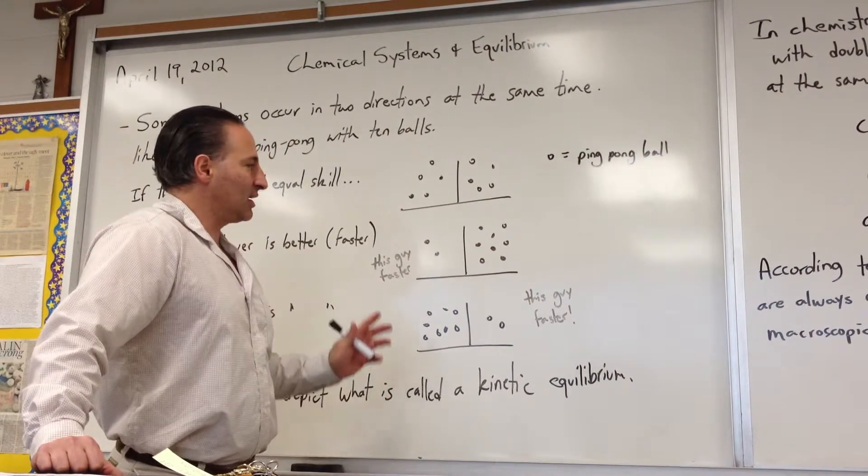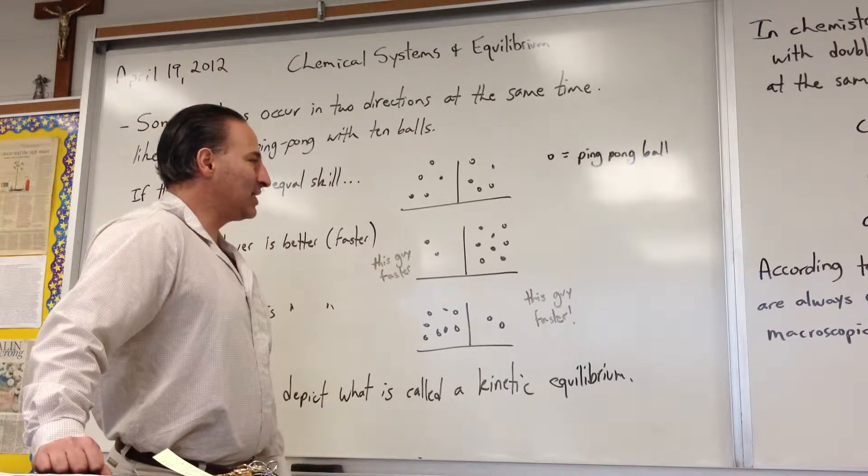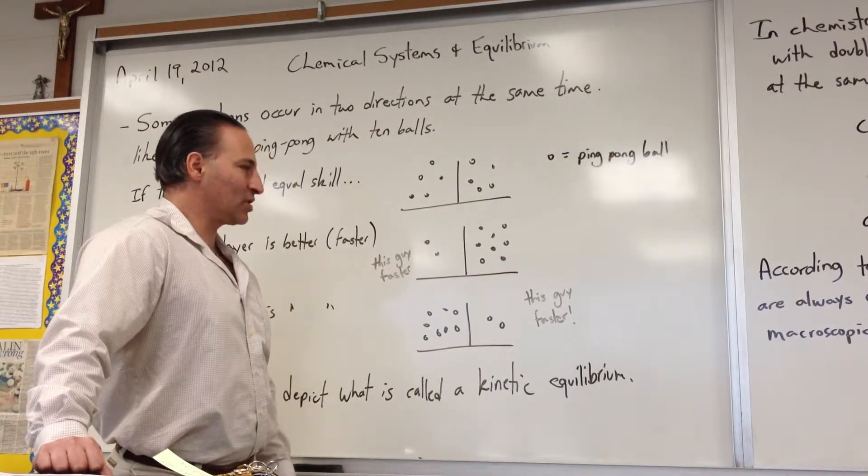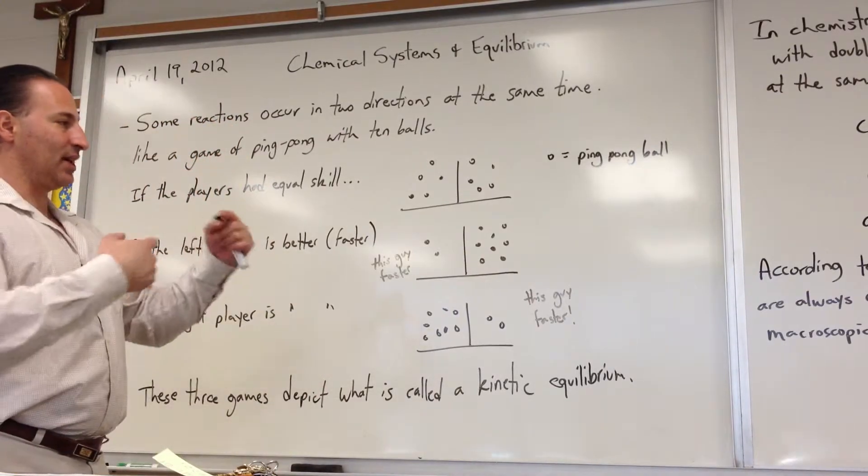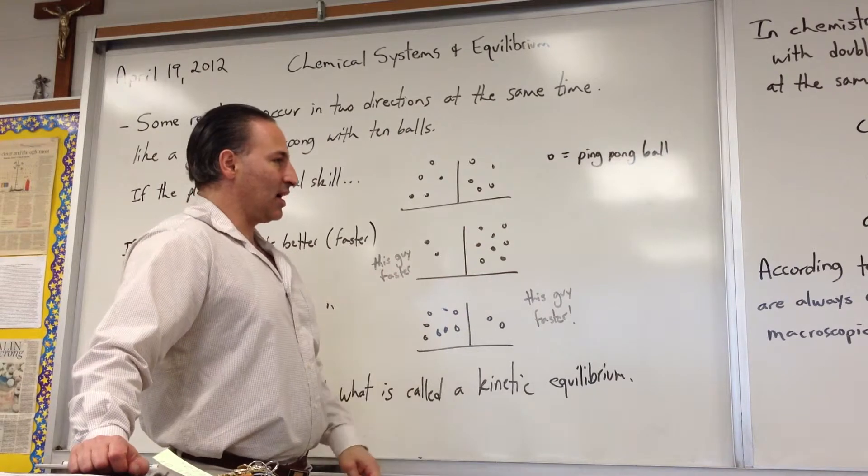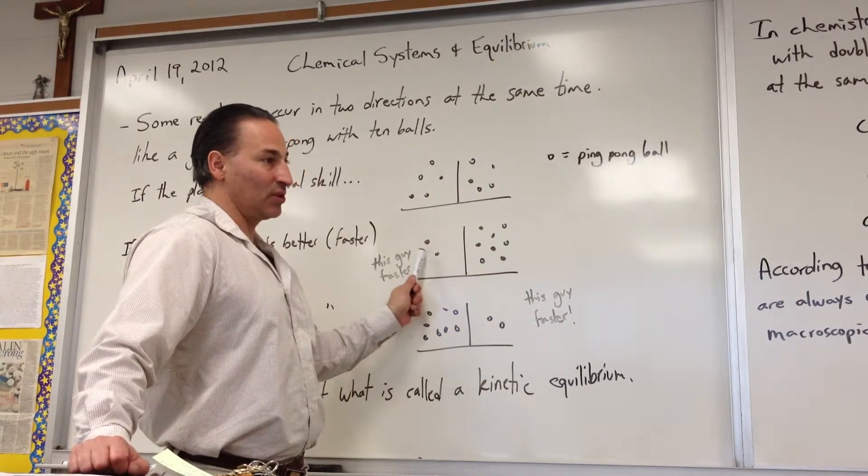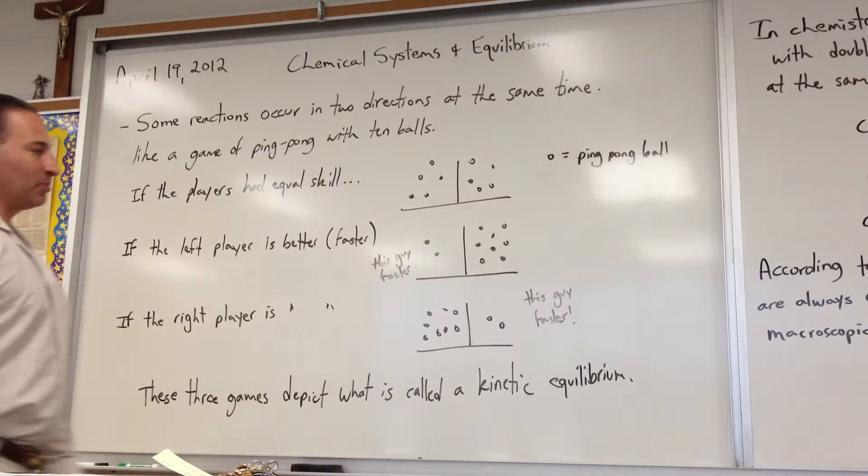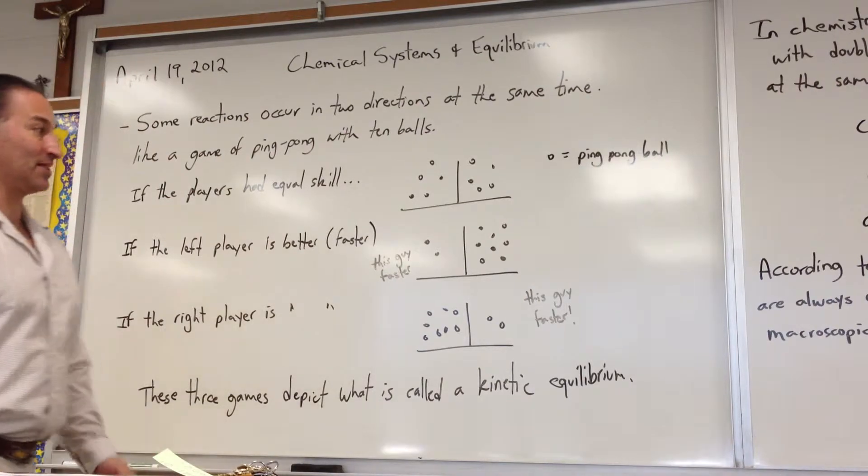But there will be an inequality. It'll again be a kinetic equilibrium, but more balls are going towards that side until they establish an equilibrium where the rates are again equal. So when the weaker player has eight balls on his side, he's going to be able to maintain the same rate as the faster player who has only two balls on his side, because the weaker player will have more balls to choose from flying around him, so he'll have an easier time to hit something.